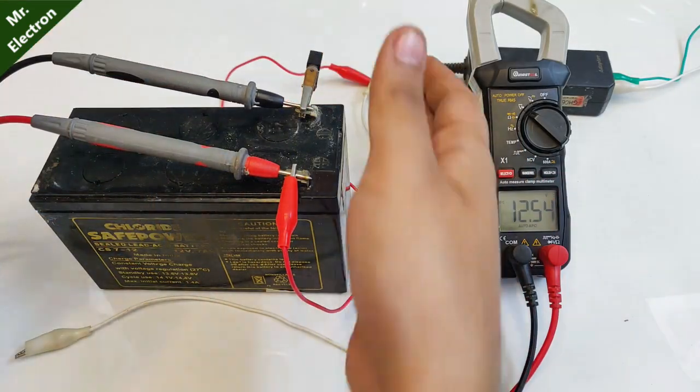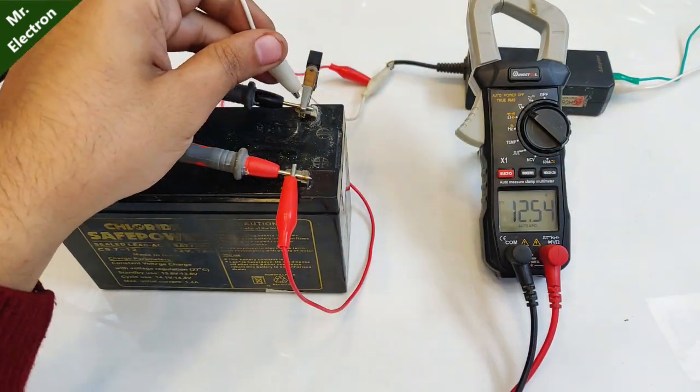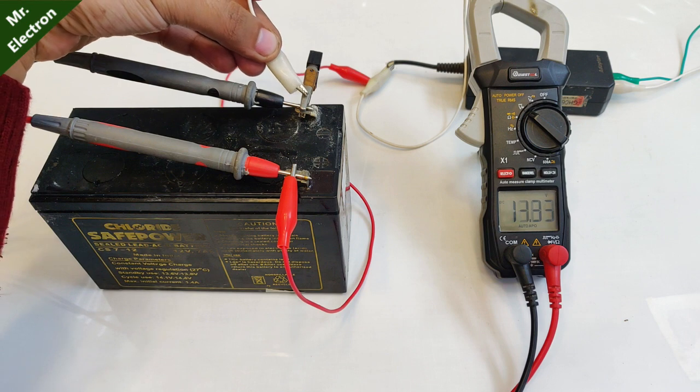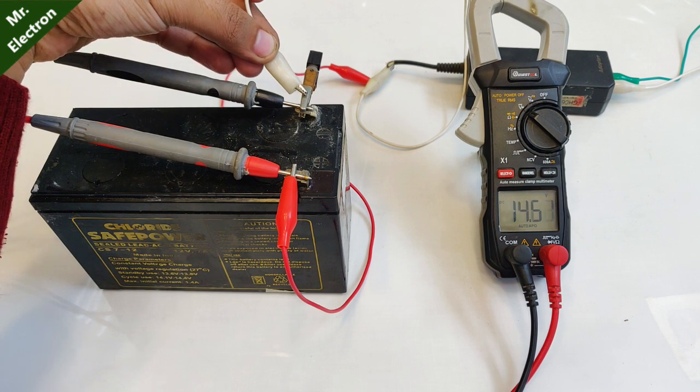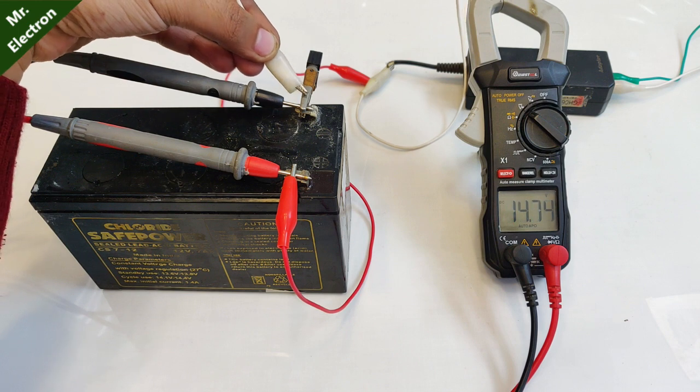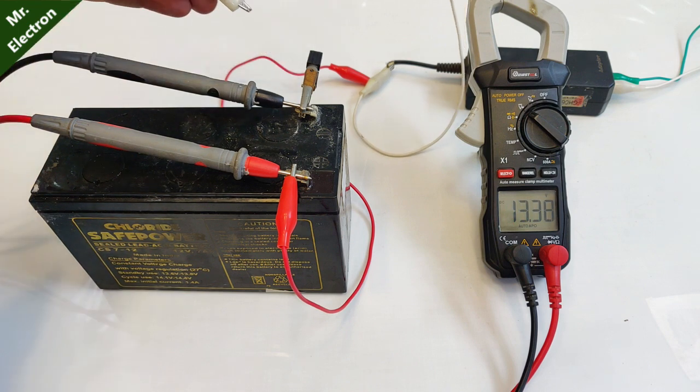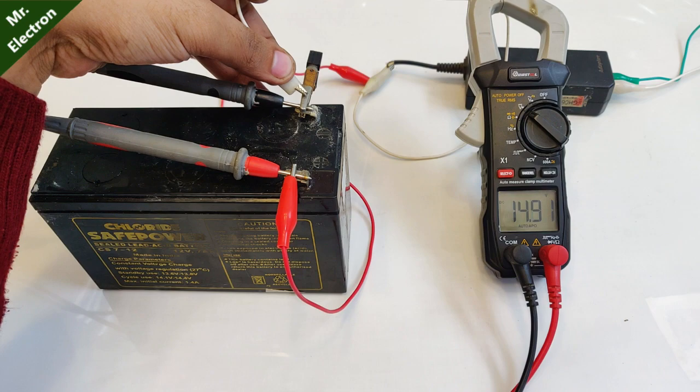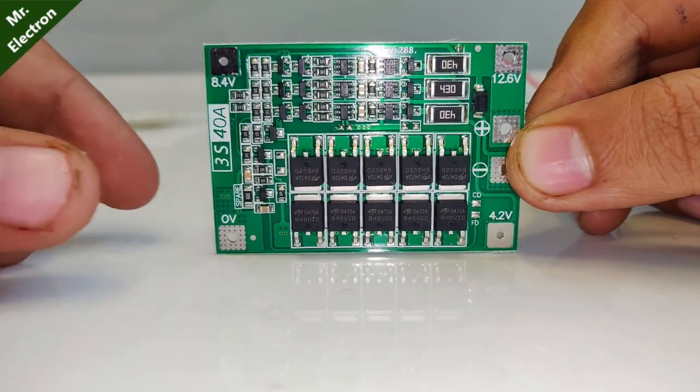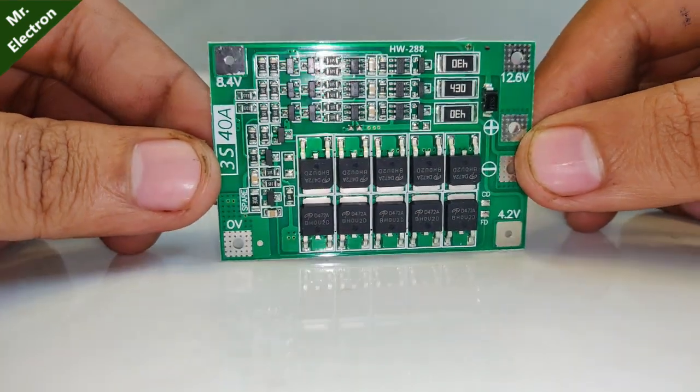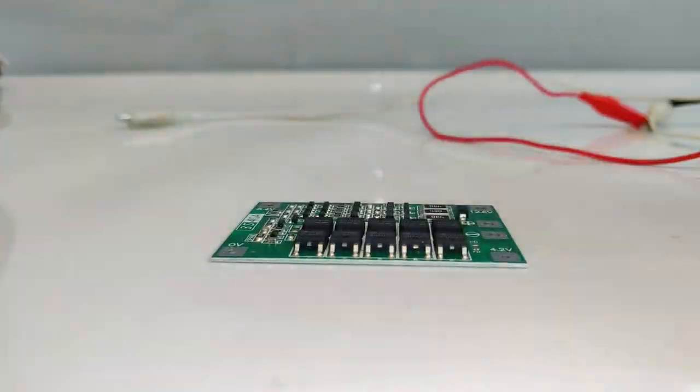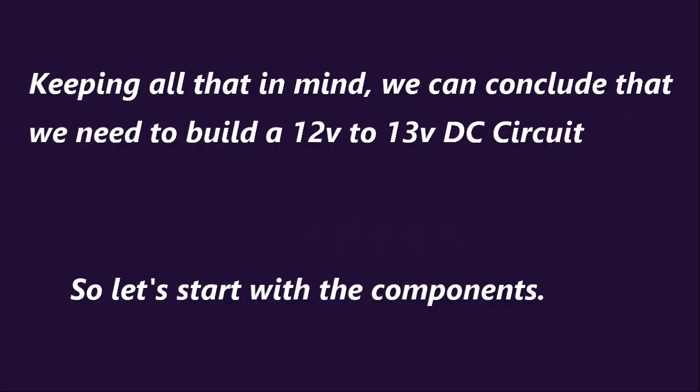Now comes the final test of connecting the 20 volt 3 ampere power supply to a 12 volt electronic circuit or a 12 volt battery. Both of them will get damaged because the battery will get overcharged with time and the electronic circuits are too much voltage specific. So keeping all that in mind, we can conclude that we need to build a 12 volt circuit. Let's get started.